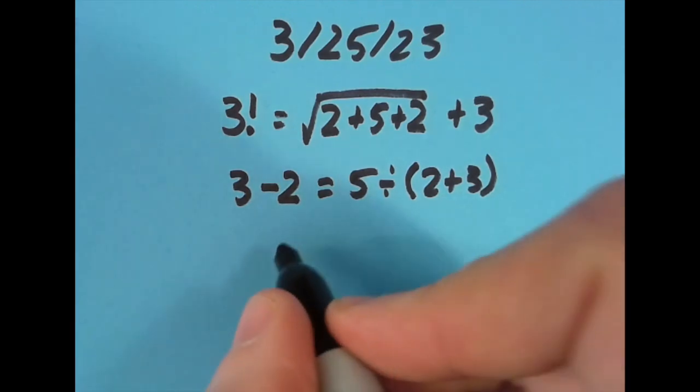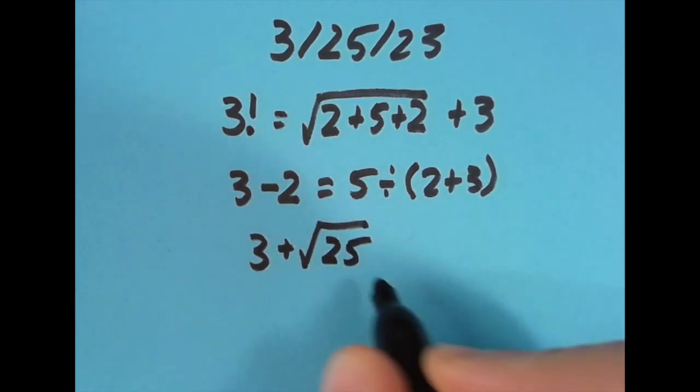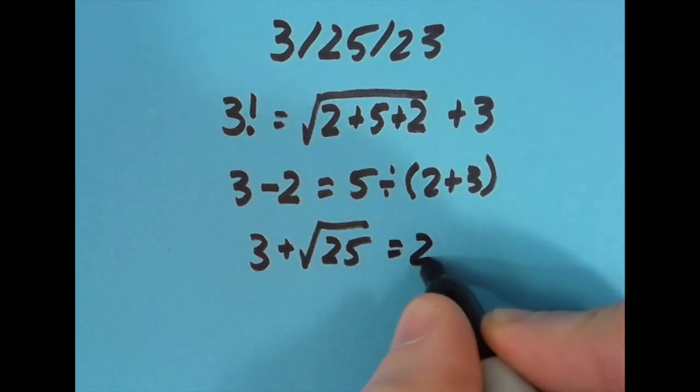Tried it again with the equal sign another spot to the right. Here I said that 3 plus the square root of 25—square root of 25 is 5—3 plus 5 is 8, and so is 2 to the third power.